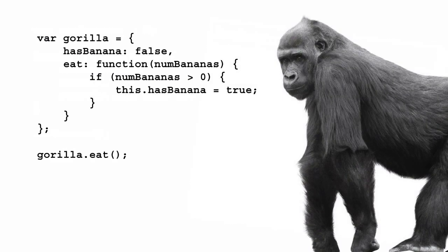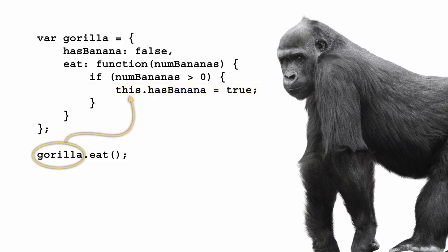Next, let's take a look at a slightly more complex case — the value of `this` in a method. A method is just a function that is a property of an object. So here we have a gorilla object that has a method `eat`, and we refer to `this.hasBanana` in the body of the method. The value of `this` is the gorilla object. Whenever you call a method of an object, the value of `this` is set to the object whose method was called, which in this case is gorilla.